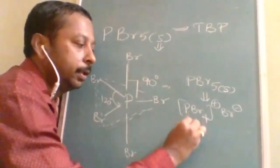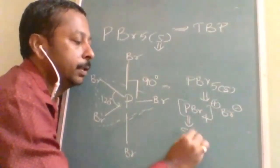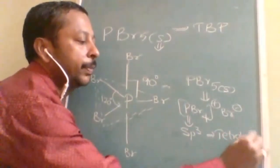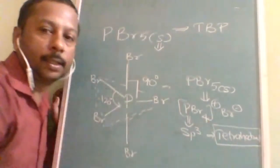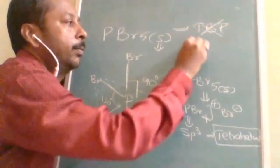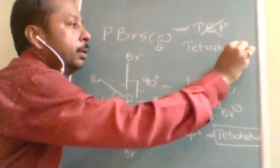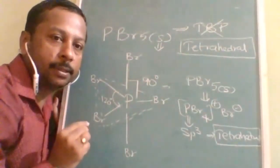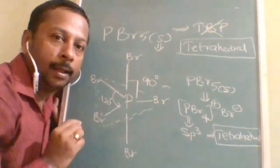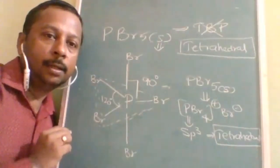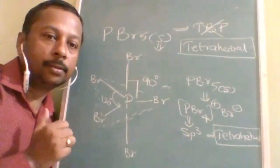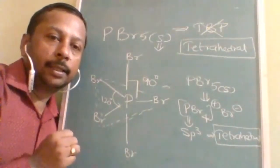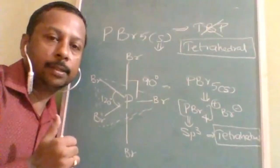In PBr₄⁺, it is sp3 hybridized, so the answer is tetrahedral. The answer should not be trigonal bipyramidal — the answer should be tetrahedral. I request everyone to subscribe to this channel and learn actual chemistry, not just apparent chemistry. Here we change misconceptions into concepts. Try to motivate me with your shares, likes, and subscriptions. Bye, all the best, do well.